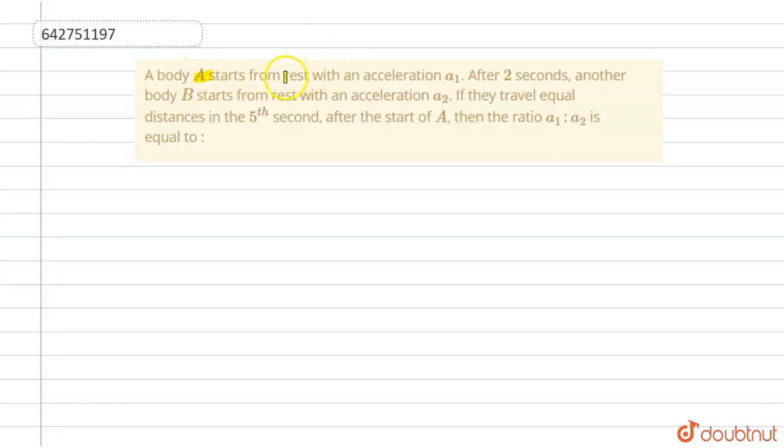A body A starts from rest with an acceleration a₁. After two seconds, another body B starts from rest with an acceleration a₂. If they travel equal distance in the fifth second after the start of A, then the ratio a₁:a₂ is equal to? So we have to find the ratio of a₁ and a₂.